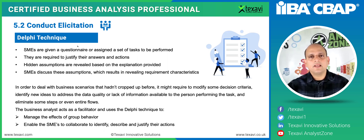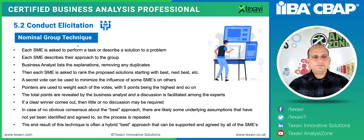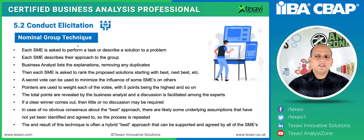The Delphi technique is used in many approaches today, like planning poker in the agile context for Fibonacci estimates. The Nominal Group Technique, or NGT, is another tried and tested approach.